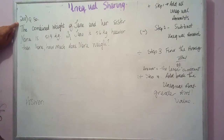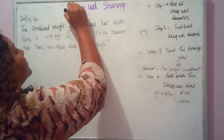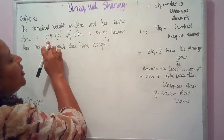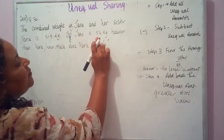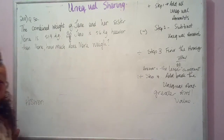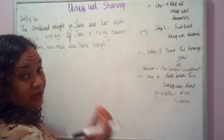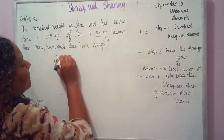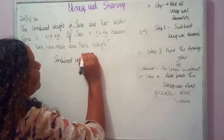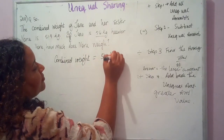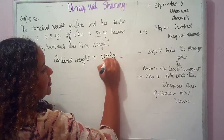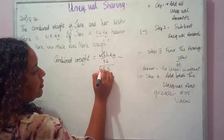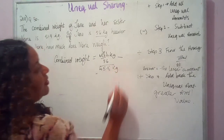From the 2011 paper, question 30, here's another example of unequal sharing. The combined weight of Jane and her sister Nora is 51.4 kilograms. If Jane is 5.6 kilograms heavier than Nora, how much does Nora weigh? We only have two persons being compared, so there's nothing to add in step one. We identify the unequal amount: 5.6 kg. Step two: subtract — 51.4 minus 5.6 = 45.8 kilograms.